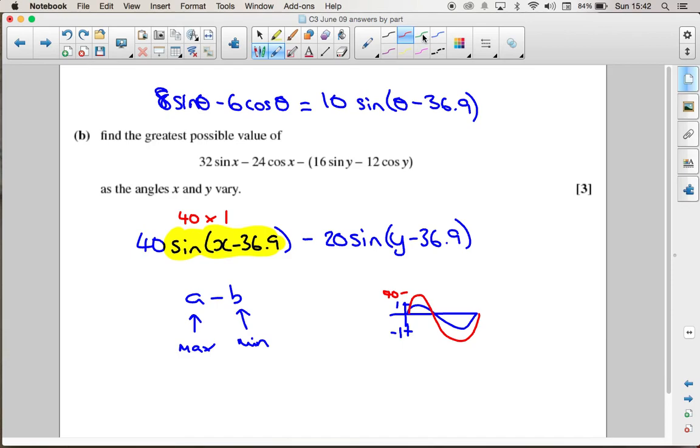If we go over and look at the second part, we've said that we want this to be as small as it possibly can be because we're taking it off. We know that the sin graph has a minimum value of -1, so the smallest value that this term can have is 20 times -1.